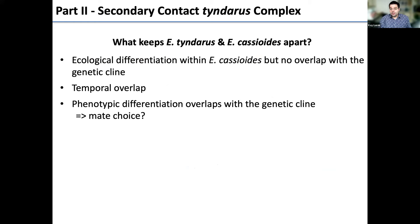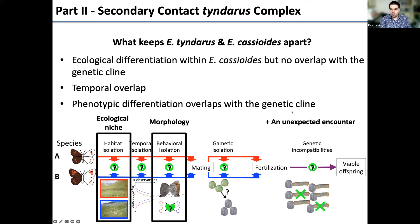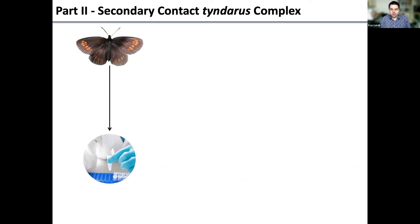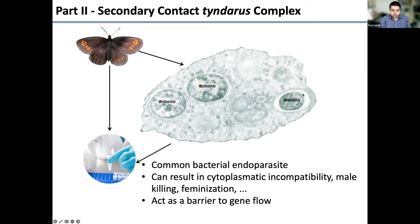Something unexpected emerged: when we extracted butterfly DNA, we also extracted their parasites — Wolbachia. Wolbachia is an endoparasite that can cause cytoplasmic incompatibilities, male killing, and feminization in other systems. We have no idea yet what it does in Aricia, but it could act as a barrier to gene flow.